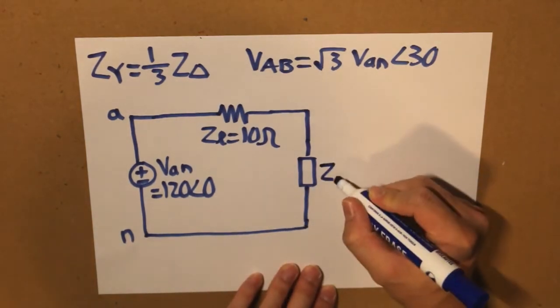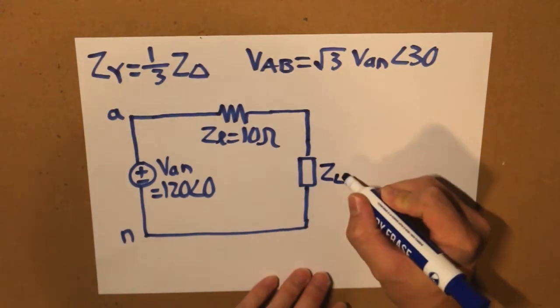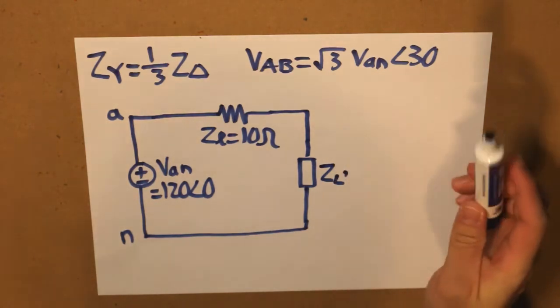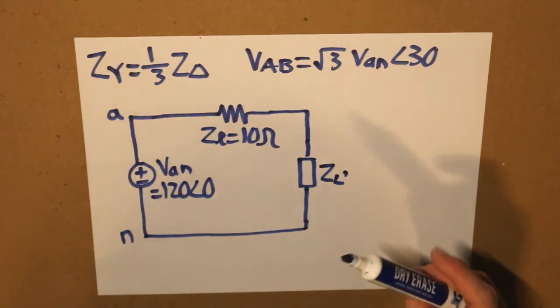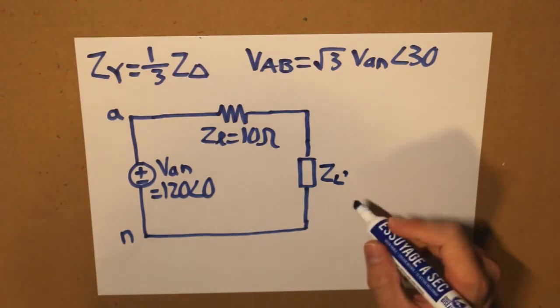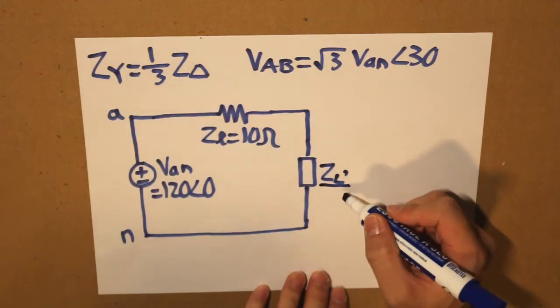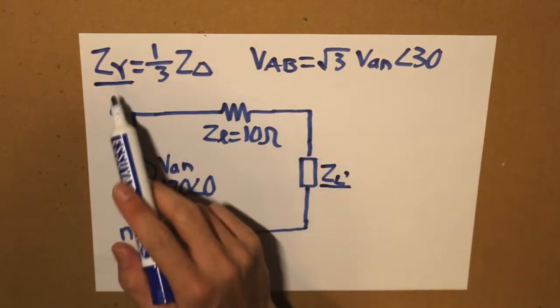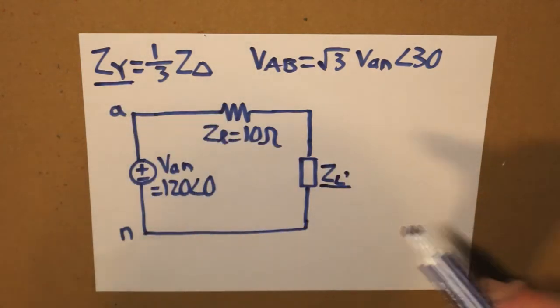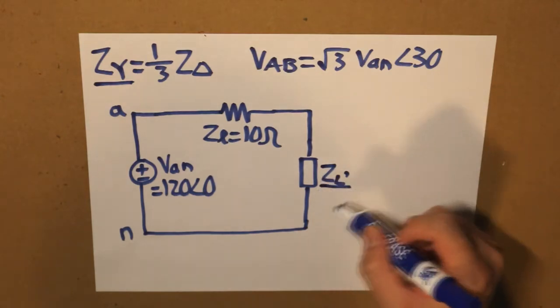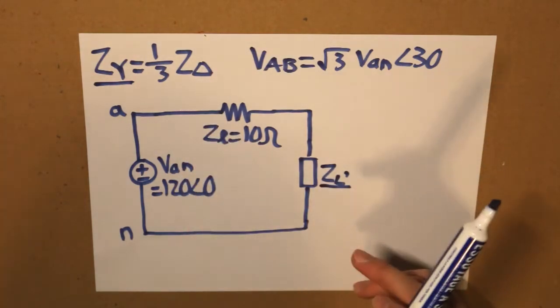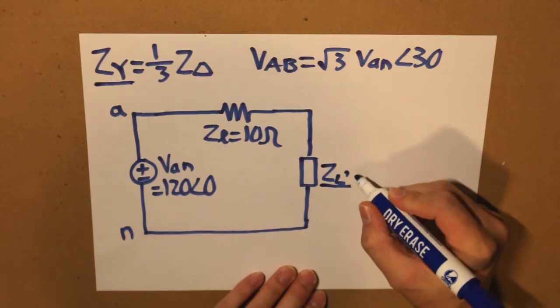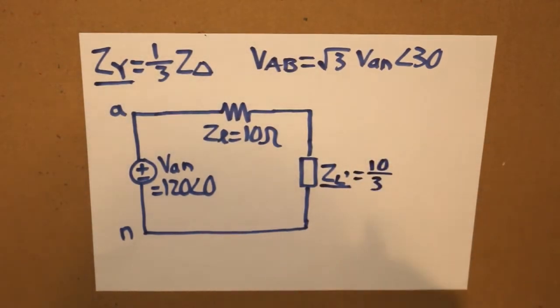So what we have to have is something like an apostrophe to say that this load impedance is different from our load impedance in the situation that we're given in our question. So what is this? Well this value is actually this value right here, because this is our Y impedance and this is our delta impedance. So in order to determine what this value is, we take that delta impedance which is 10 ohms, divide by 3 and what we get is 10 over 3.